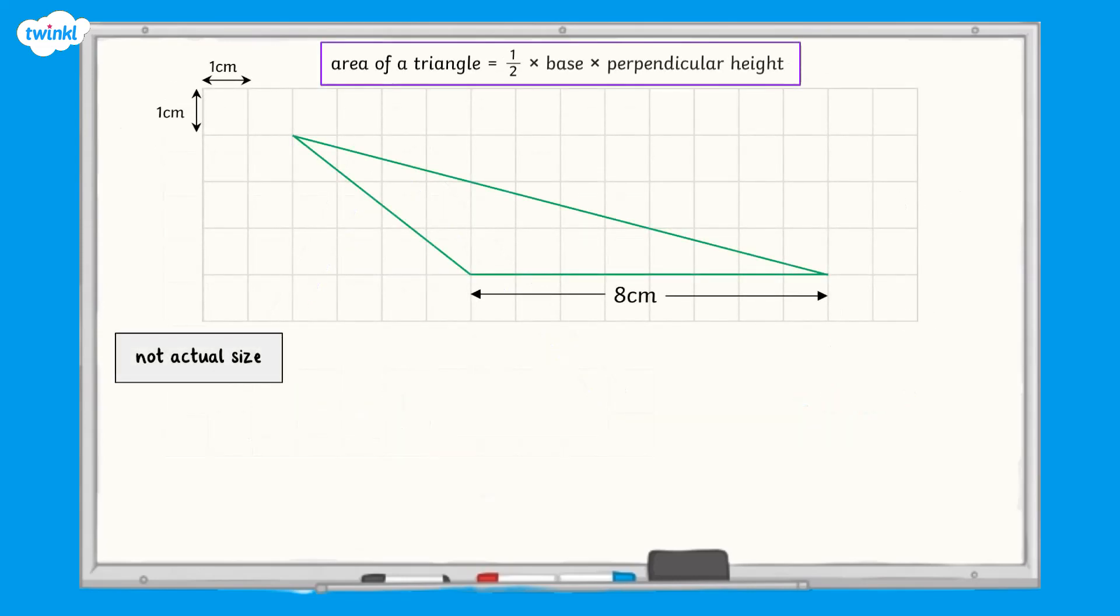Sometimes the perpendicular height isn't inside the triangle, like in this example. Here, we can extend the base so that it is directly beneath the corner at the top of the triangle, making a right angle.